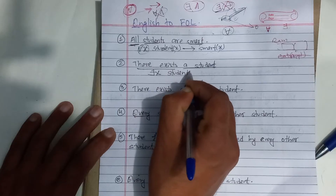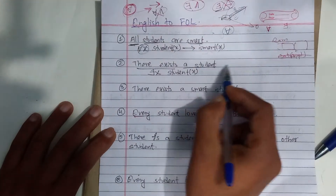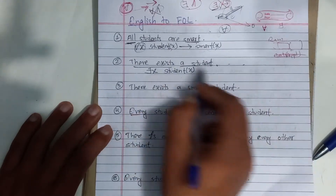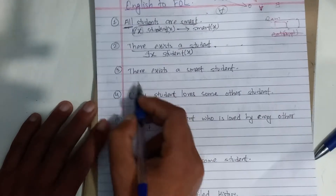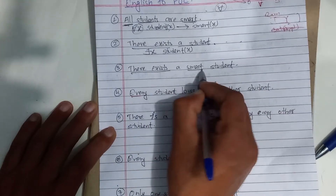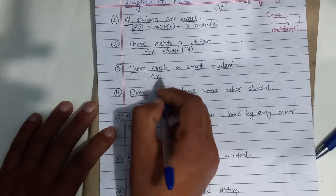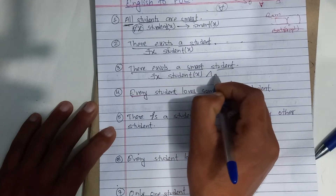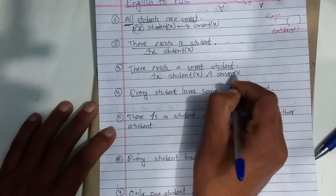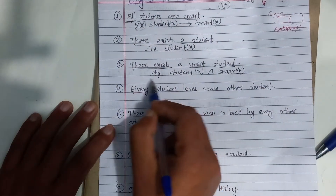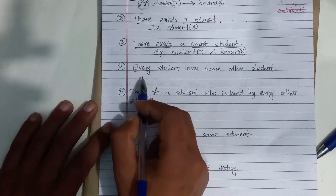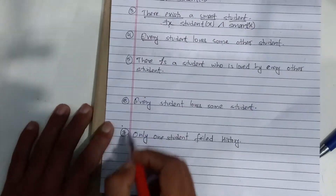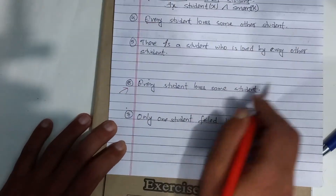There exists Yax, Yax is student. There exists Yax, Yax is student — there is no condition. Yax is smart, Yax is student. There exists Yax, Yax is student and Yax is smart. Every student loves some other student. First, we will be able to learn every student loves some student — this is what we will know.